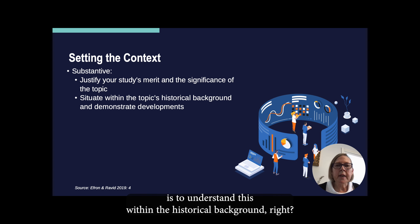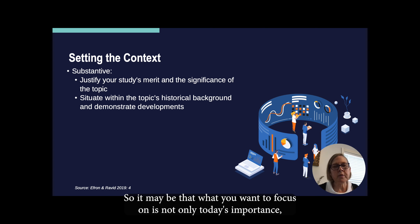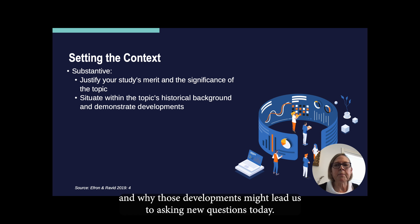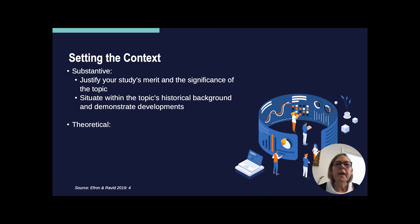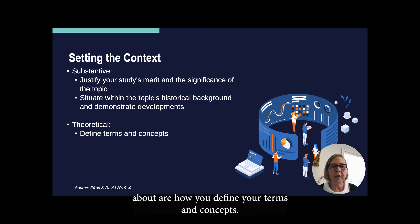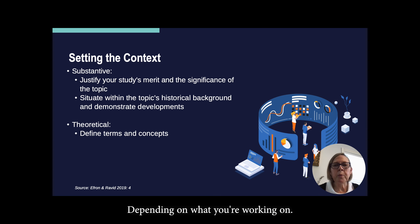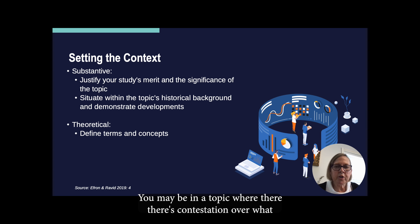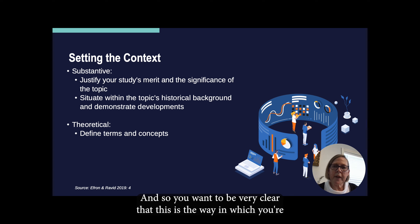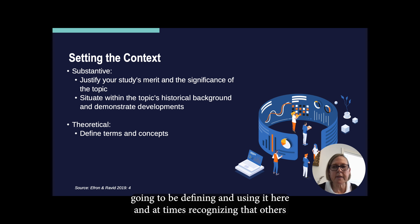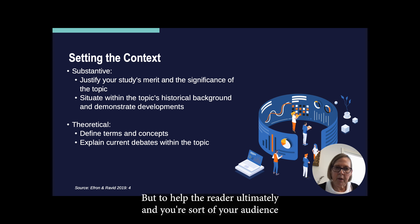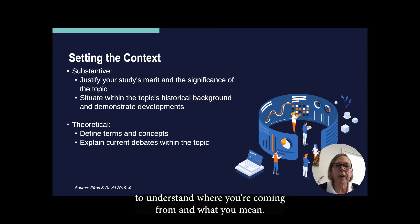Part of setting context is also to understand it within the historical background — not only today's importance, but why this topic has had a historical development and why those developments might lead us to asking new questions today. The second way to think about setting context is in terms of theory. One thing you'll want to be very clear about is how you define your terms and concepts. Depending on what you're working on, you may be in a topic where there's contestation over what social engineering means, or what development is. You want to be clear about how you're defining and using terms, recognizing that others may have employed different definitions.